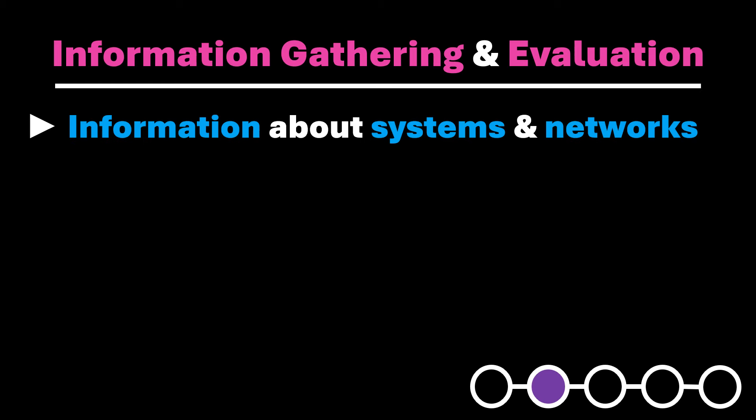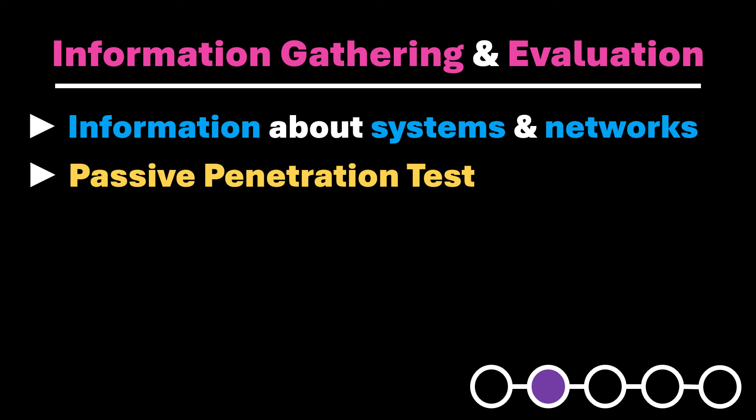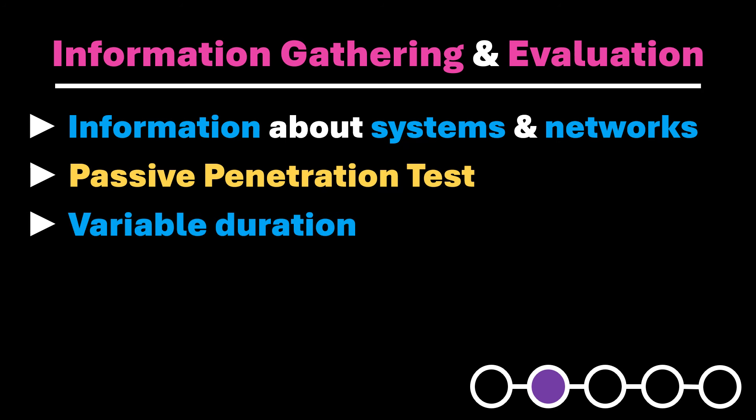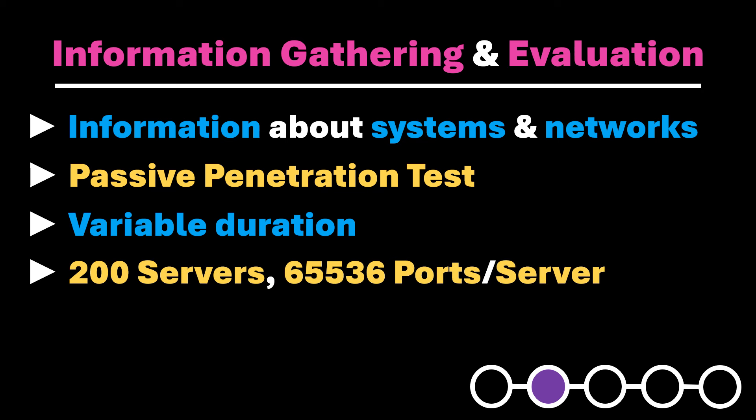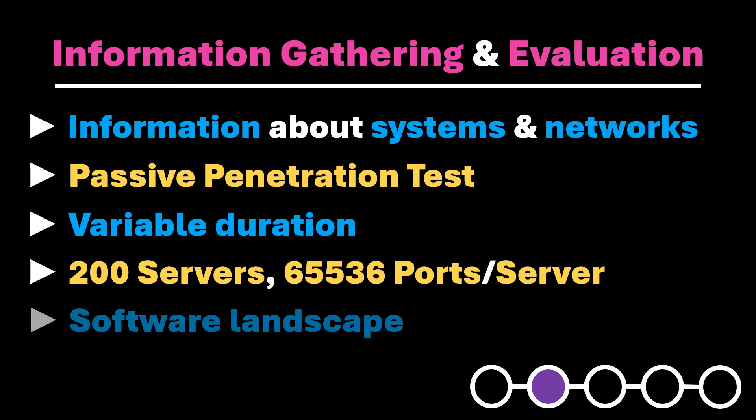Once the framework is clearly defined, the information-gathering phase begins. This phase aims to obtain a comprehensive view of the target organization by collecting relevant information about its systems and networks. This step is often referred to as a passive penetration test. The duration of this phase can vary depending on the size and complexity of the network to be tested and requires careful planning. For instance, imagine a company that operates 200 different servers — each server must undergo a full port scan of 65,536 ports, which can be very time-consuming. These mass scans are automated, but this process may slow down subsequent steps if the necessary computing resources are unavailable or if we have to wait for the results. Besides port scanning, other measures, such as mapping the software landscape and the technologies used, should be considered. Therefore, you should plan for the information-gathering phase to be time-consuming during a pen test.